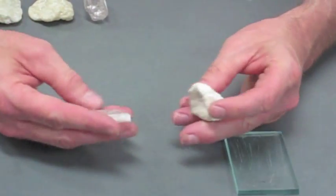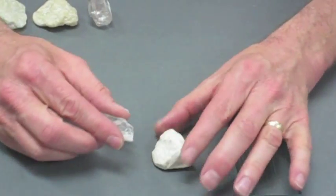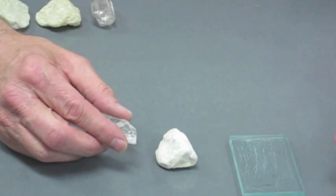This is the mineral gypsum. It's pretty easy to tell based on its physical characteristics, and the most important one is hardness.